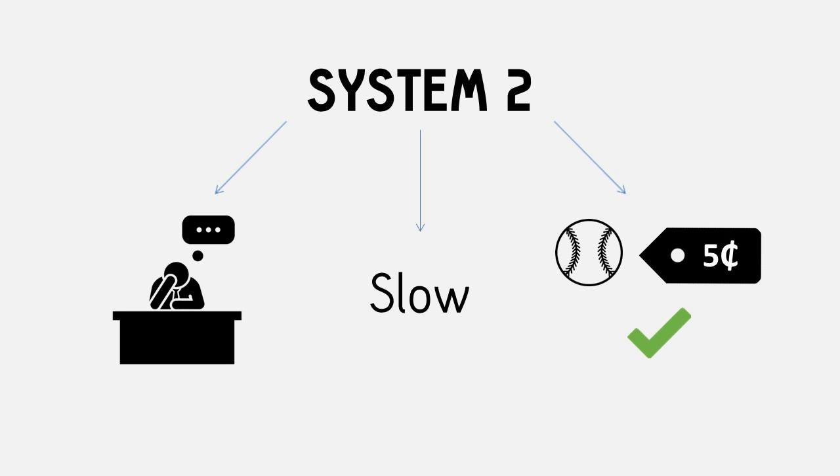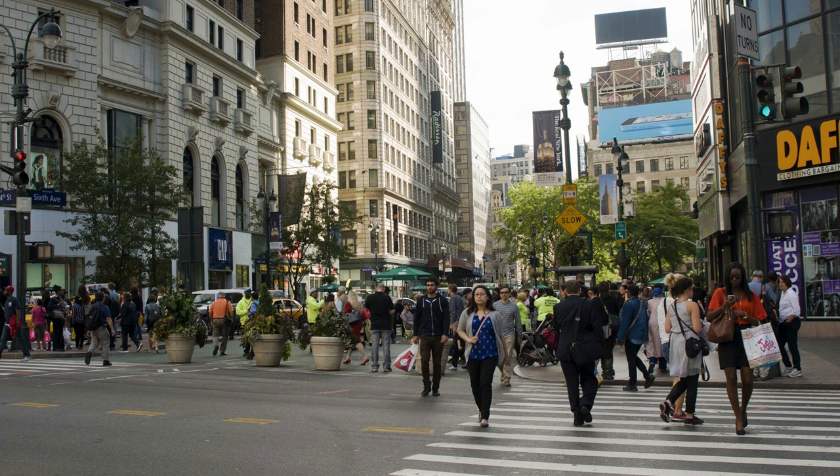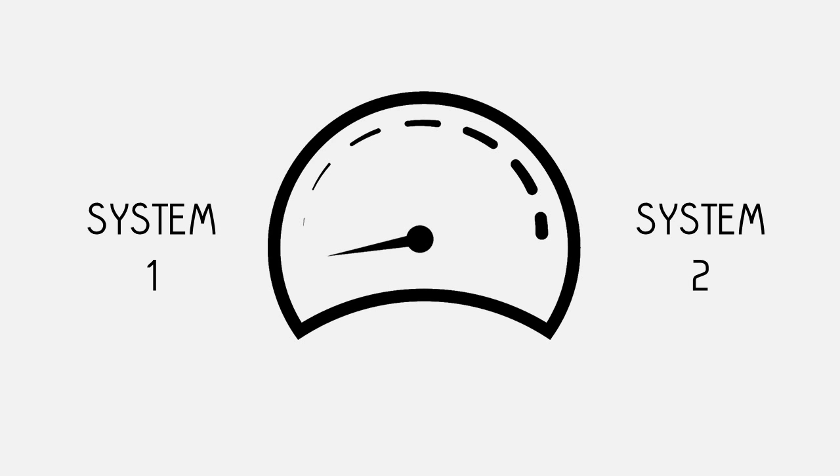Now, it's important to note that most of the time, our brains are operating on System 1 thinking. But, there are a few things that will alert the brain to switch to System 2. One of them is cognitive strain.